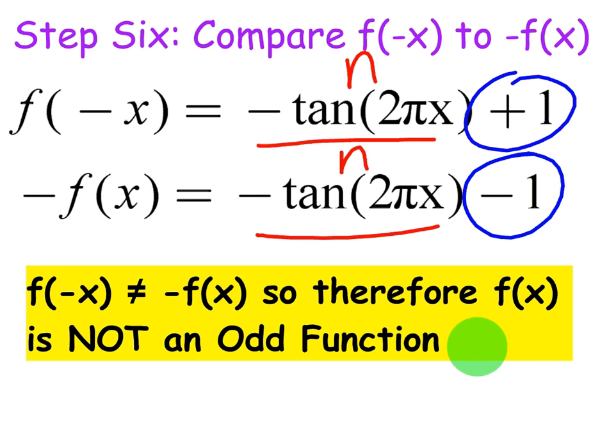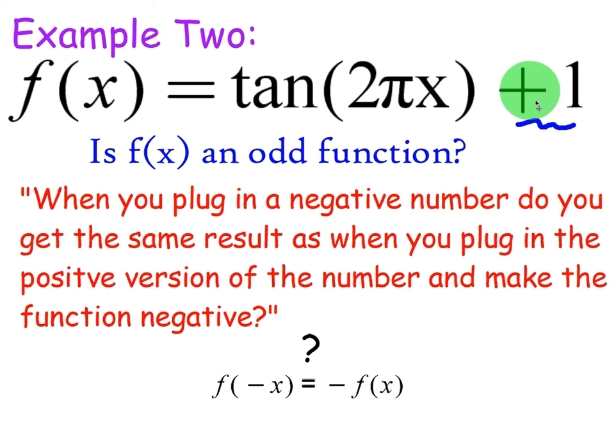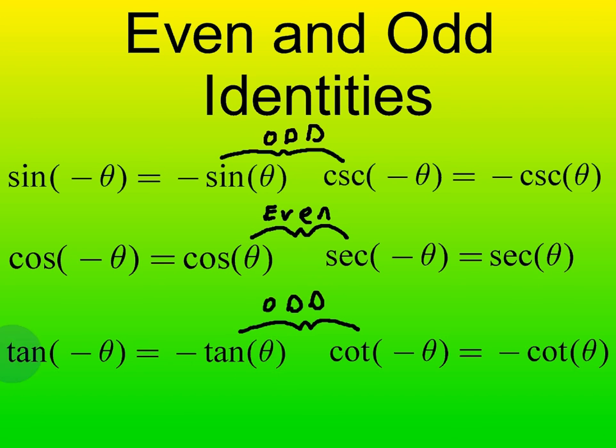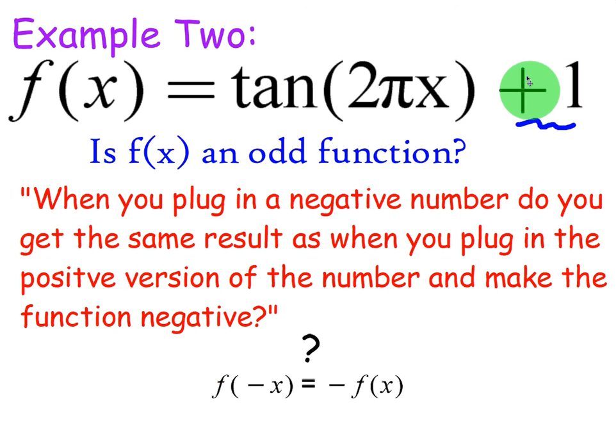So we've just proven that tangent of 2 pi x plus 1 is not odd. Even though, in our identities, strictly tangent of negative theta equals negative tangent of theta. But we've said before that when you alter that, it can end up not being odd, which we've just shown.